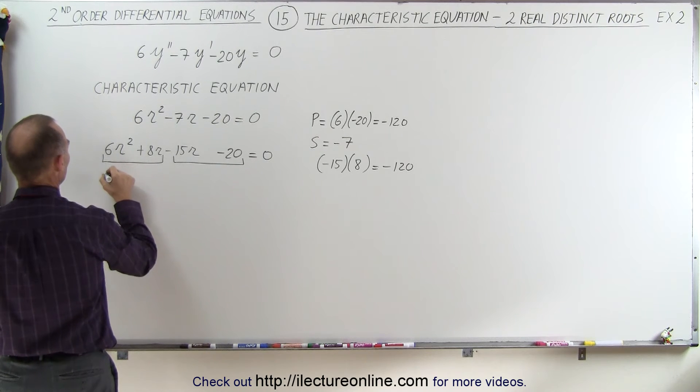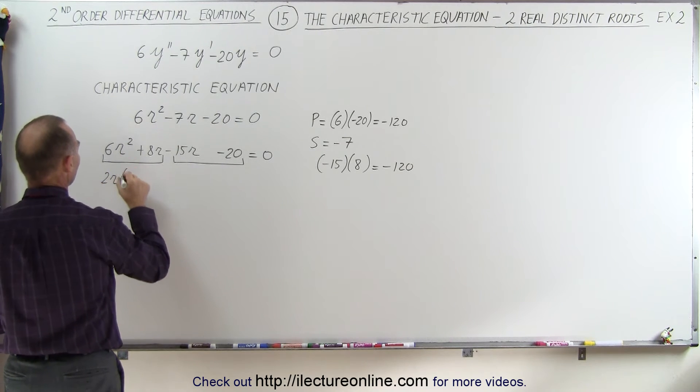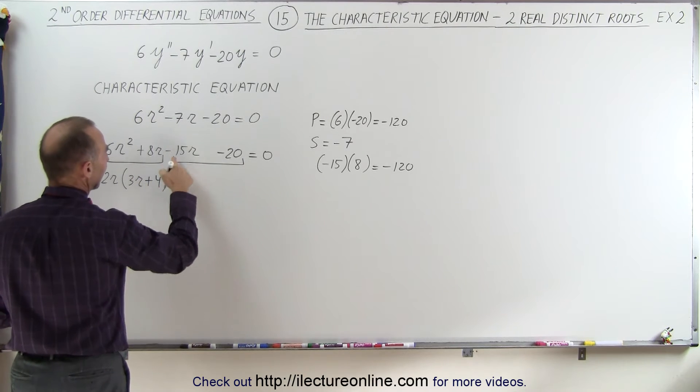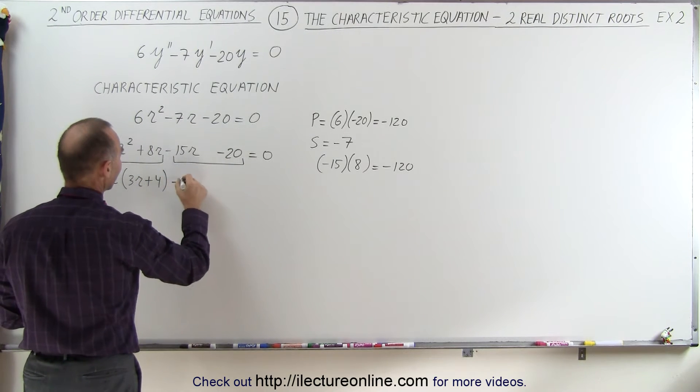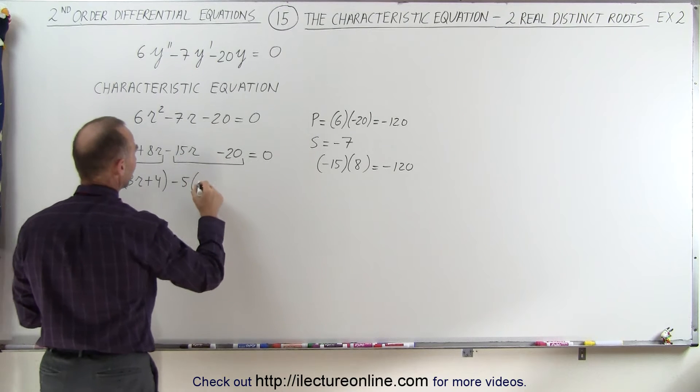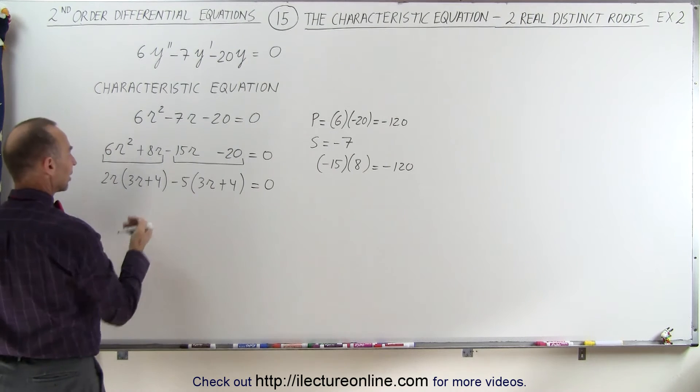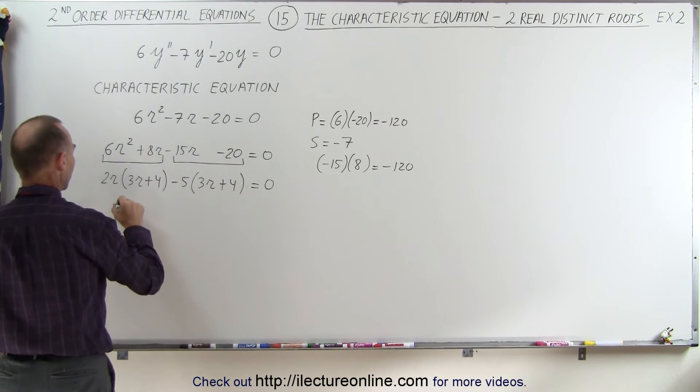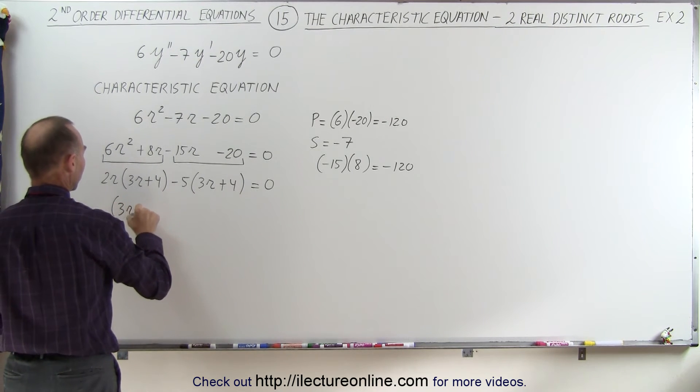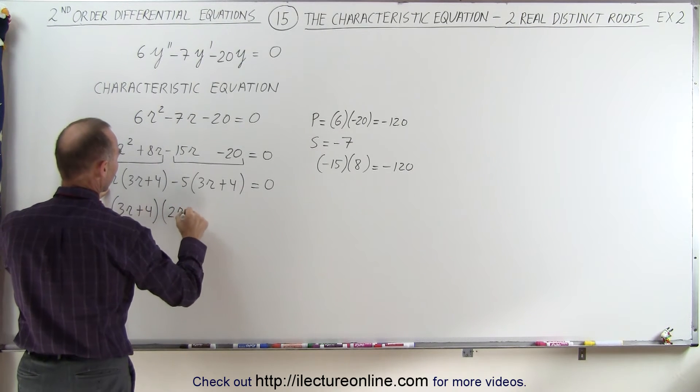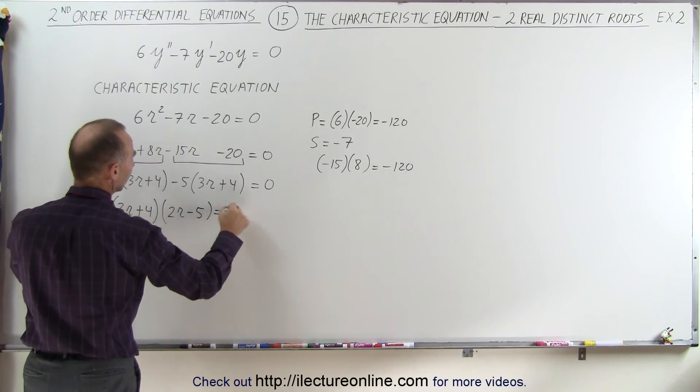Factor out a 2r here, and I'm left with 3r + 4. Here I can pull out a -5, and I'm left with 3r + 4. Then you can factor out 3r + 4, which gives us (3r + 4)(2r - 5) = 0.